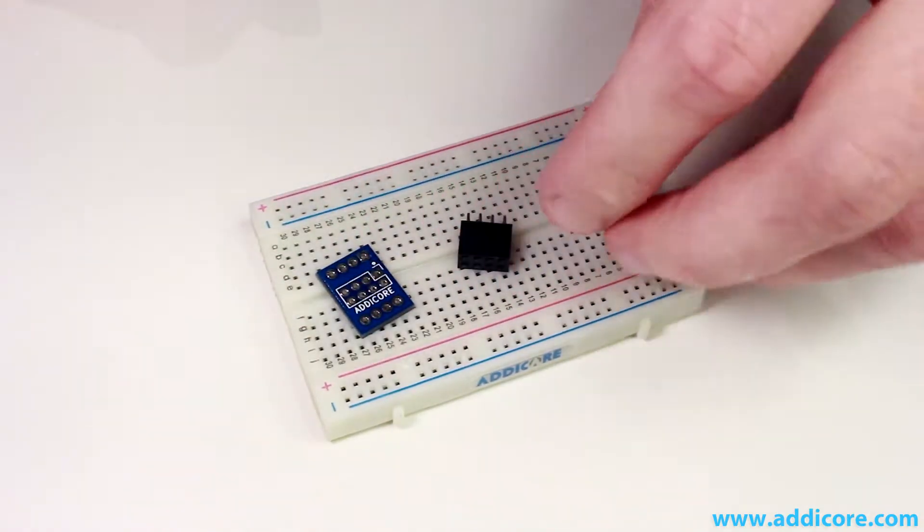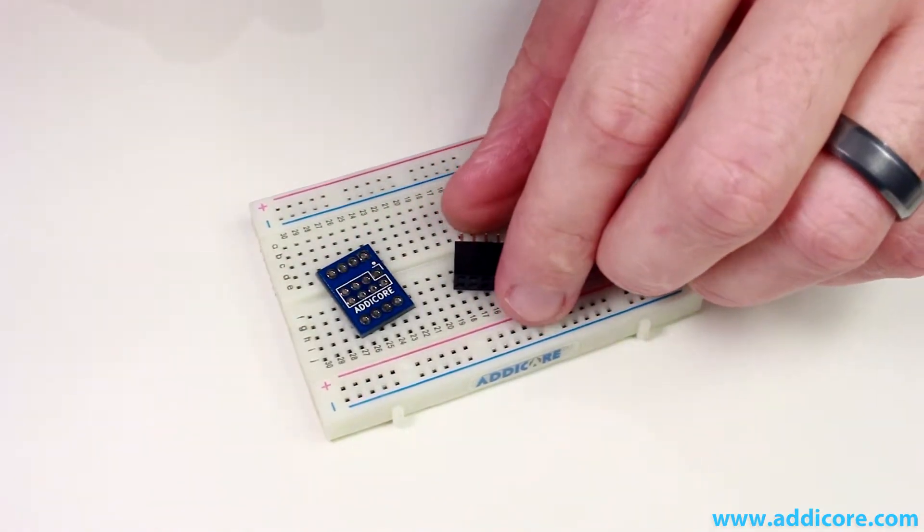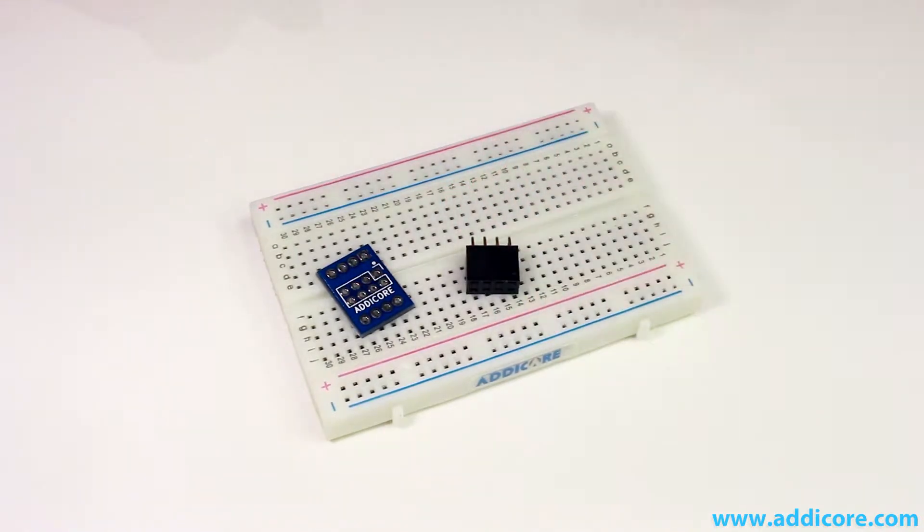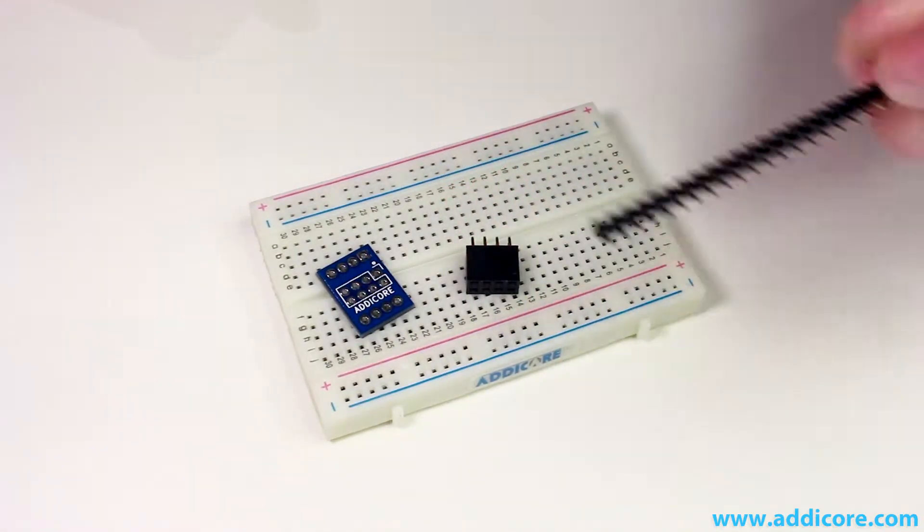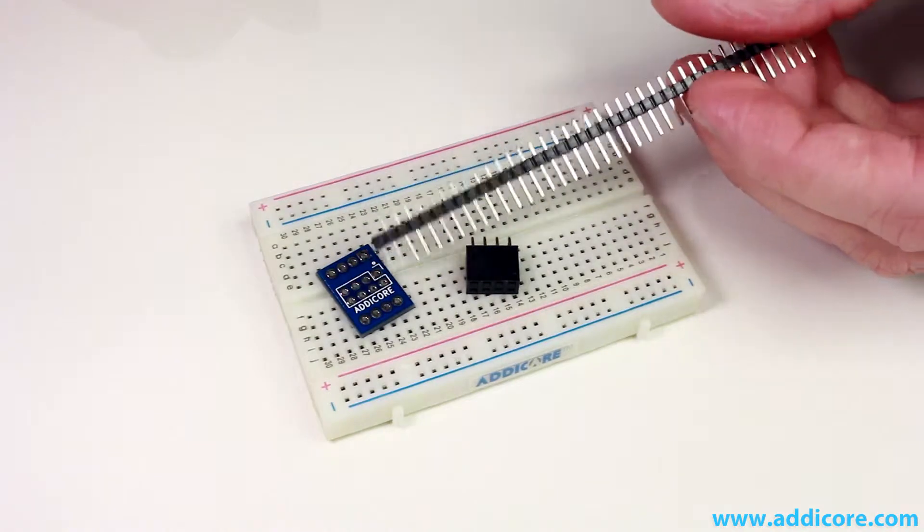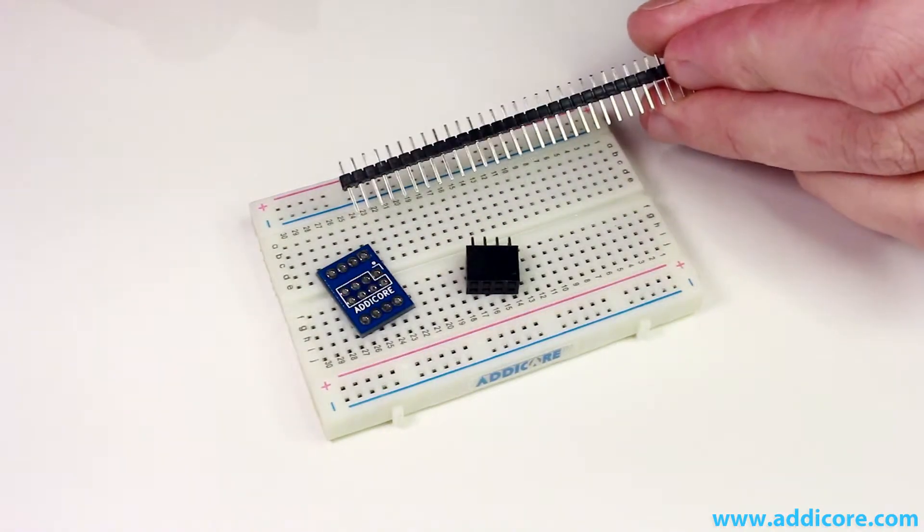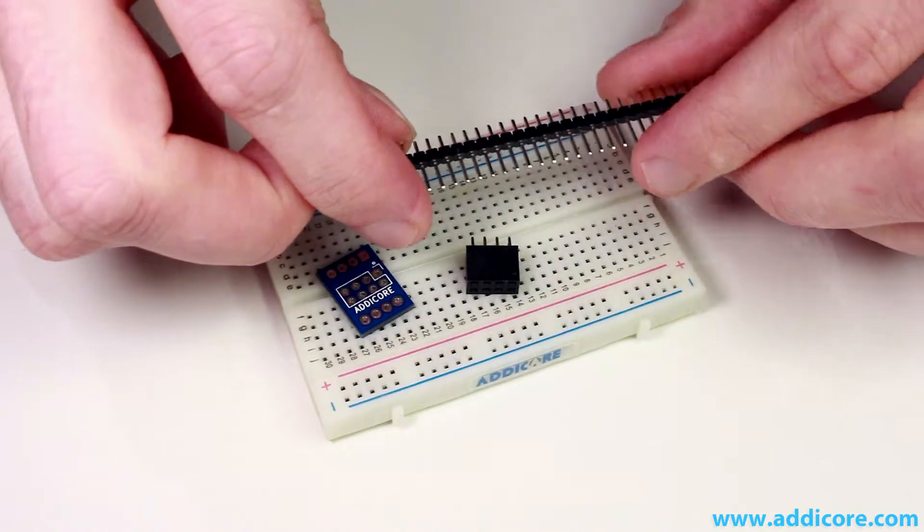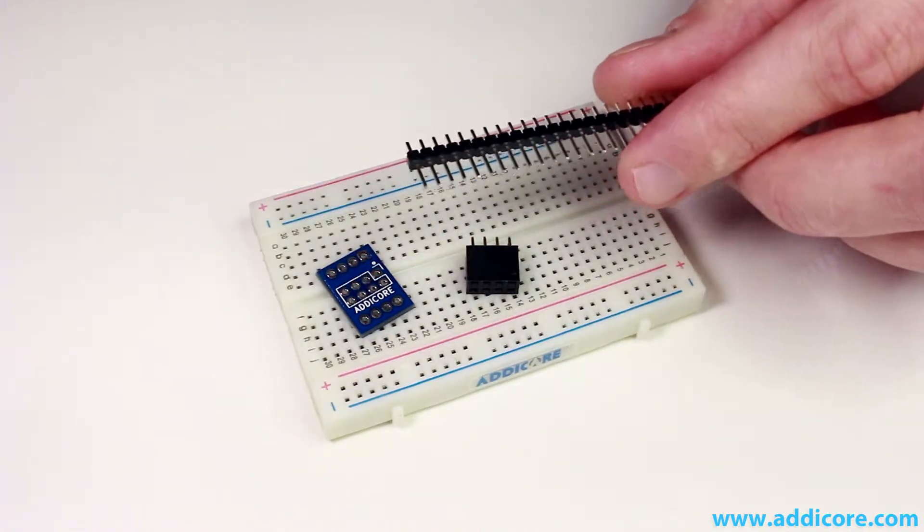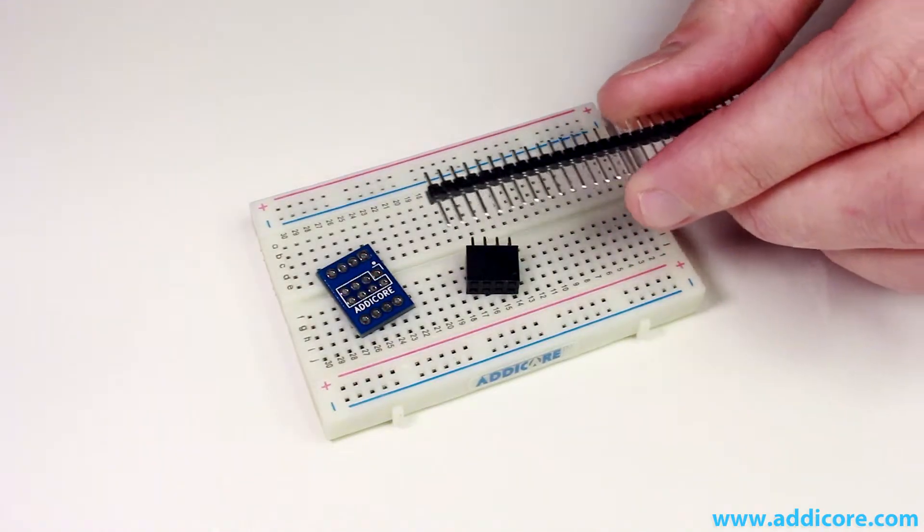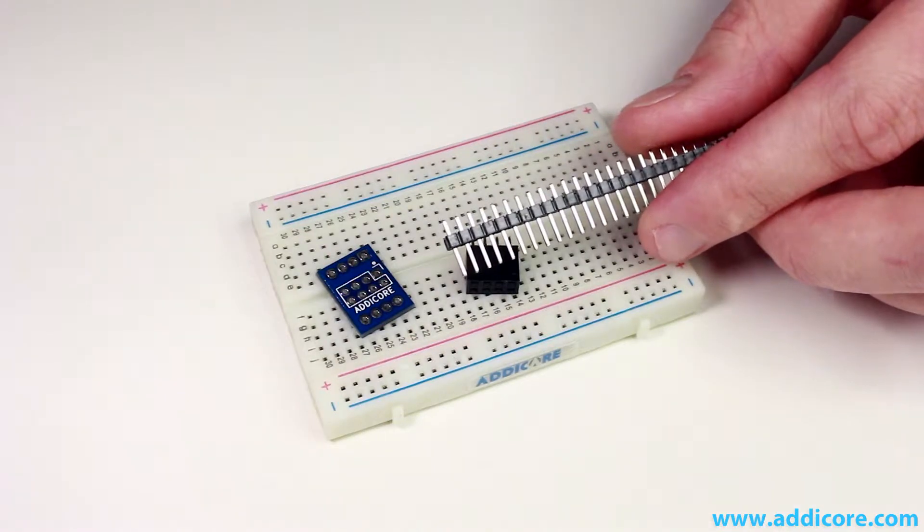And then you'll need one of the 2x4 headers that should come with your adapter. And you'll also need some male header pins and your adapter should come with these. There's a chance it may come with a whole strip if you ordered five or more.